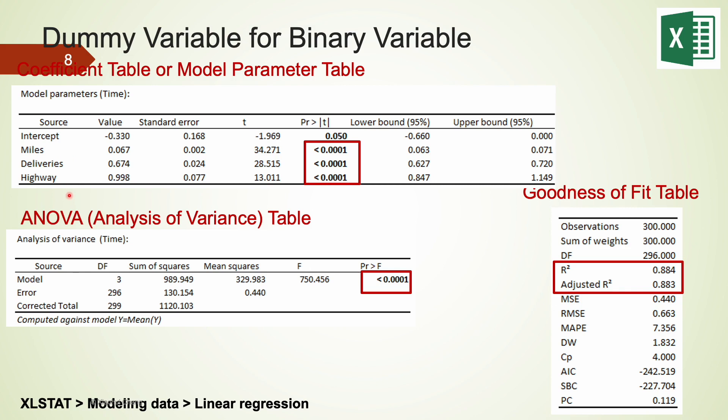All the p-values indicate that all three independent variables are important to predict time. Let's take a closer look at our binary variable highway. The slope estimate for highway is 0.998, which indicates that if one assignment involves a highway, it will take about one hour more than another assignment with the same distance driven and the same number of deliveries. The r-square is much higher than the threshold of 70%. The f-test also suggests that this is a sufficiently useful model.